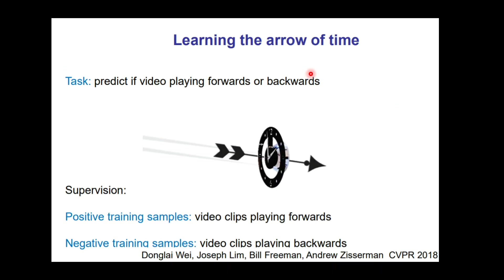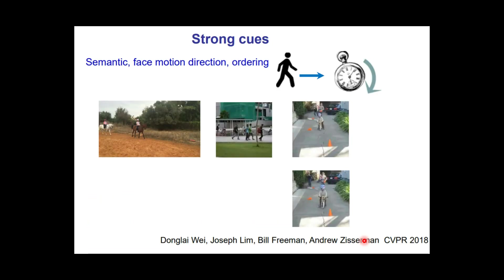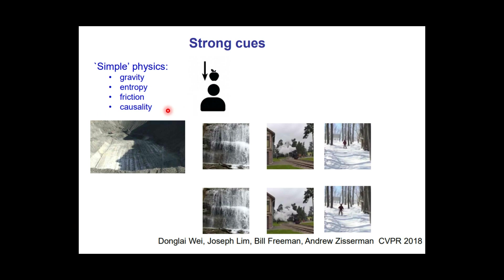Another task is learning the arrow of time — the task is to predict if a video is playing forward or backward. Positive training samples are video clips playing forward, and negative samples are video clips playing backwards. The idea is that the network will learn strong cues about the semantics and physics of the real world. For example, as per gravity and physics, a waterfall should fall from top to bottom. Through predicting the arrow of time, the network learns that the waterfall should fall downward and not upward — it should be in the forward direction. These tasks enable the network to learn the semantics and even the physics of the real world.